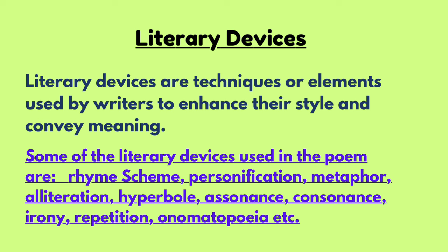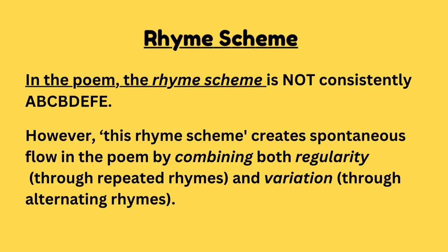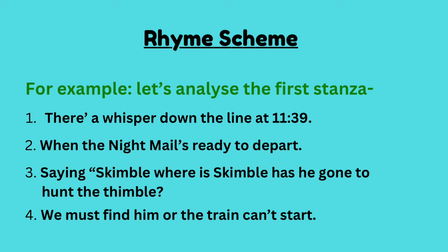The first literary device I would like to discuss is the rhyme scheme of the poem. The rhyme scheme is ABCBDEFE. However, this rhyme scheme is not consistent throughout the poem. The rhyme scheme creates a spontaneous flow in the poem by combining both regularity through repeated rhymes and variation through alternating rhymes. Let me analyze the first stanza and show you one example.